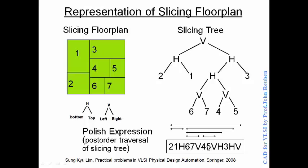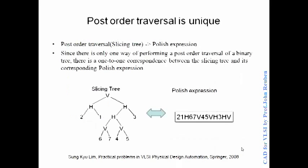This entire thing is left. So left, then 3 and H, then on the right we have a subtree 2, 1, H. That entire 2, 1, H is left, the one on the right, and then the node itself. So the full post-order traversal gives: 6, 7, V, 4, 5, V, H, 3, H, 2, 1, H — and then the remaining subtree. That is how you get the polish expression from the slicing tree.